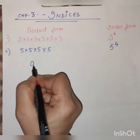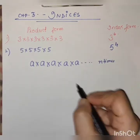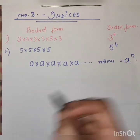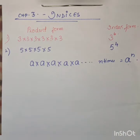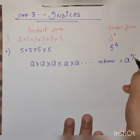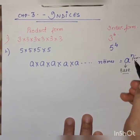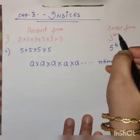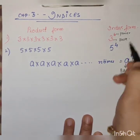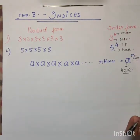Generally, if we say a into a into a multiplied n times, we write a raised to n. This is the index form. In this index form, we call n as power or index and a is the base. So 6 is power or index and this is base. Here 4 is the power and 5 is the base. This is all about index form.